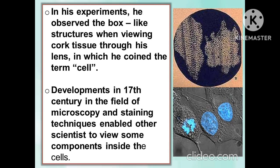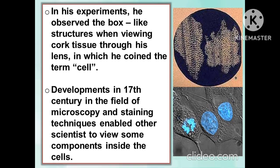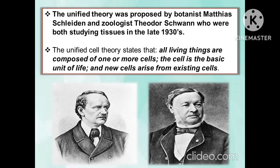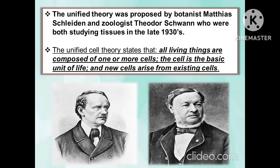Developments in the 17th century in the field of microscopy and staining techniques enabled other scientists to view some components inside the cell. The unified theory was proposed by botanist Matthias Schleiden and zoologist Theodor Schwann, who were both studying tissues in the late 1830s. The unified cell theory states that all living things are composed of one or more cells, the cell is the basic unit of life, and new cells arise from existing cells.